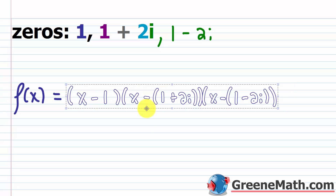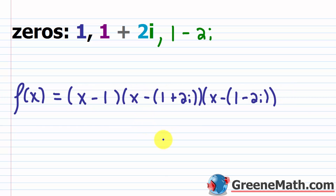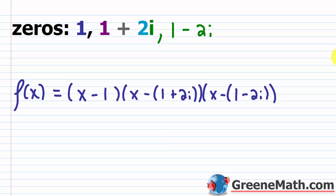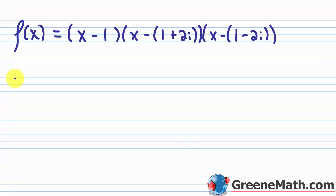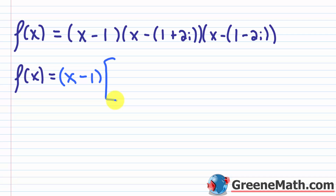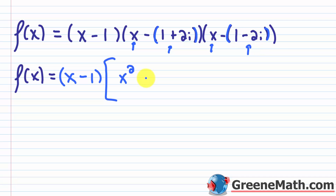We're going to simplify this — it's tedious, but it's good practice working with complex numbers. I'll leave x minus 1 outside and use FOIL on the complex factors. Treating x as the first term and the complex number as the second term in each binomial: first terms give x squared. Outer terms give negative x times (1 minus 2i).